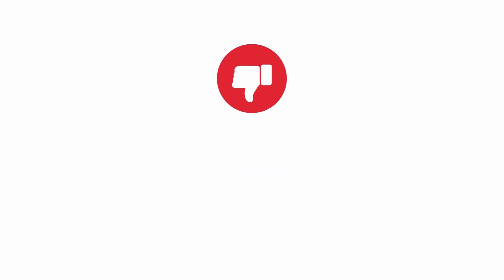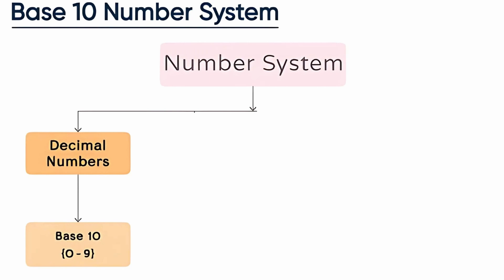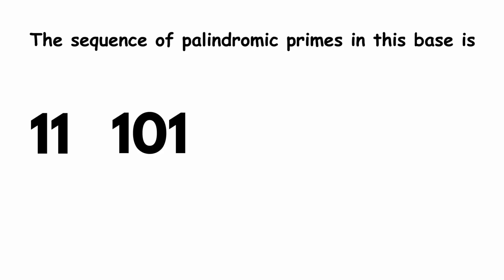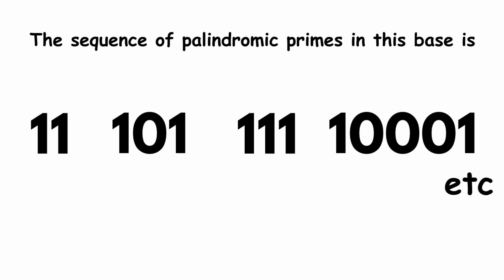Indeed, there is nothing special about base 10, such sequences exist in other bases as well. For instance, unlike the 10 digits of decimal, binary has only two digits, 0 and 1. The sequence of palindromic primes in this base is 11, 101, 111, 10001, etc.